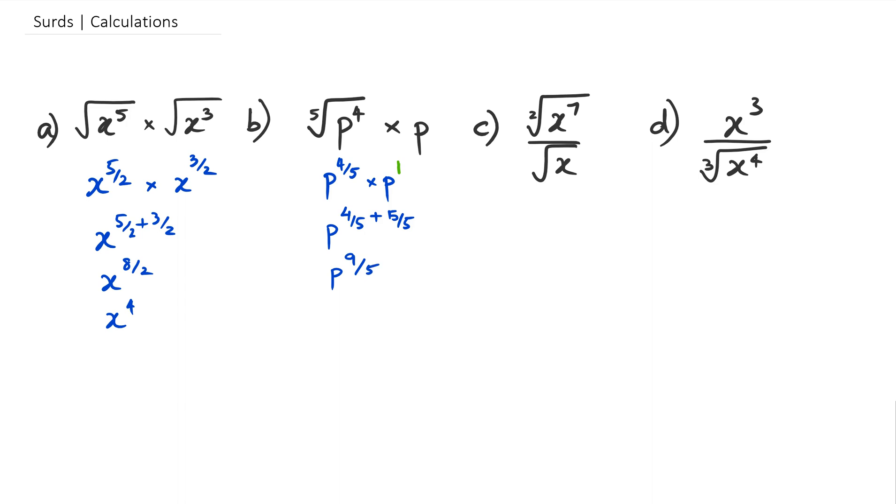And sometimes they might ask you the question like, leave your final answer in surd form. If they do that, then you can actually leave your final answer in the surd form of p to the power of 9 and its fifth root.